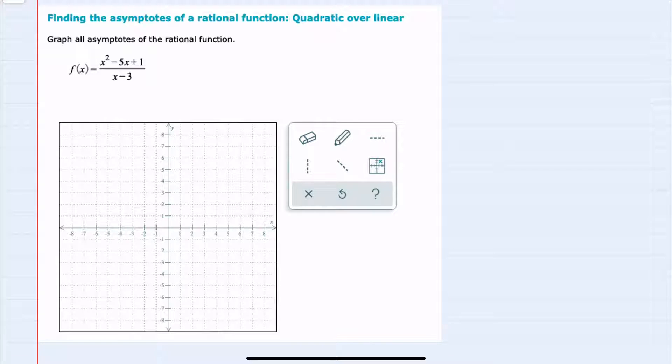In this video I'll be helping you with the Alex problem type called finding the asymptotes of a rational function, quadratic over linear.